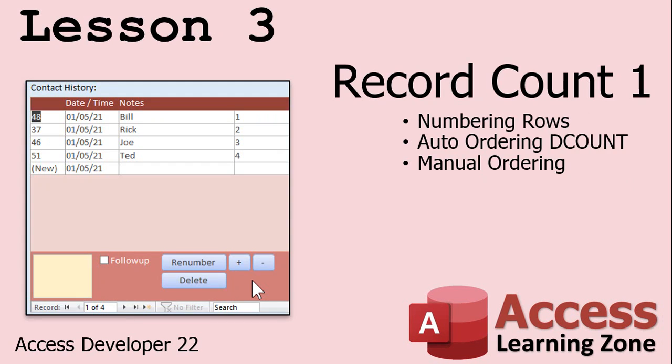In lesson three, we're going to set up a record counter. Whether you've got products, contacts, customers, or whatever, we can have Access automatically number the rows for us — one, two, three, four. If we delete a record, it'll renumber. If we add a new one, it'll renumber. We'll learn about auto-ordering with the DCount function, and we'll allow manual reordering of the numbers as well, so you can type in and change it. We'll put little buttons on the bottom to go up and down and to renumber them.